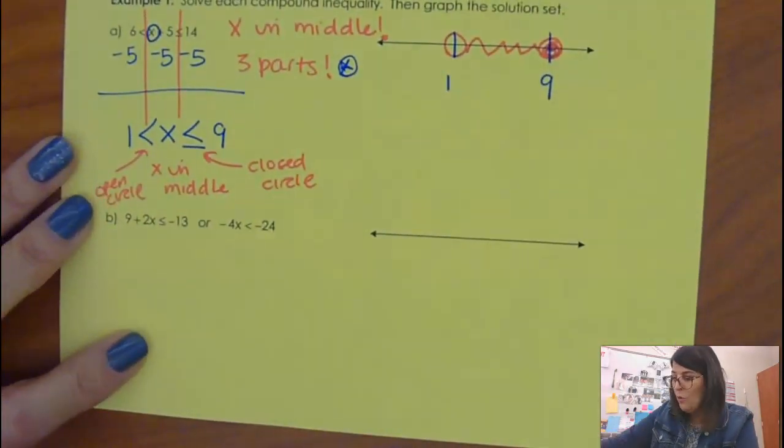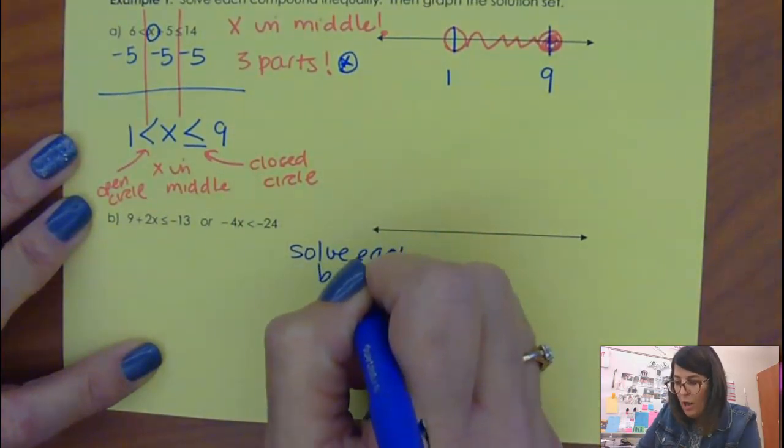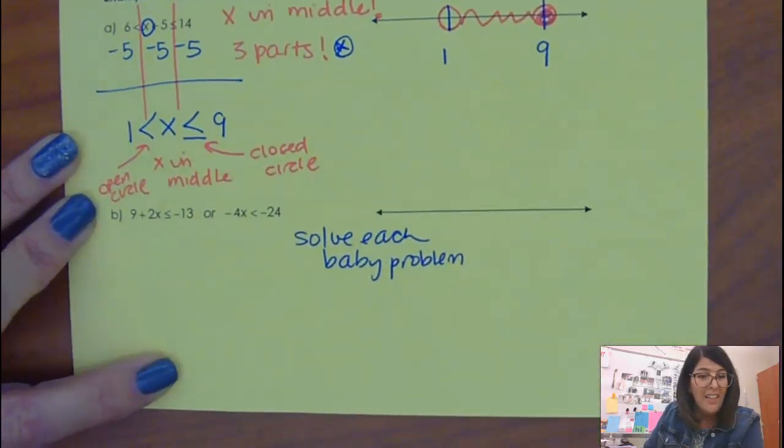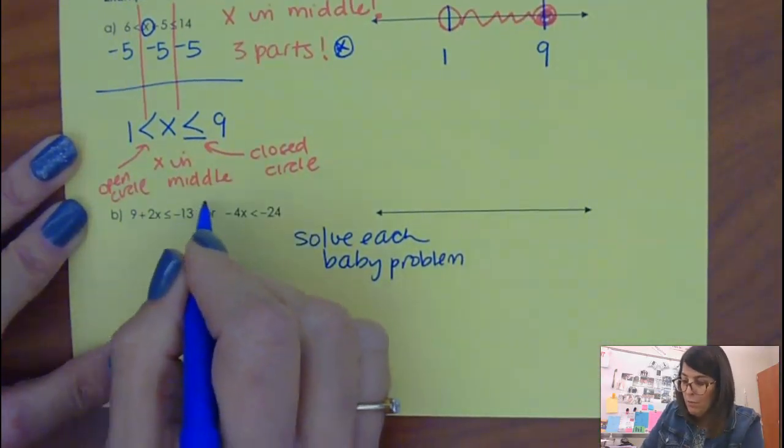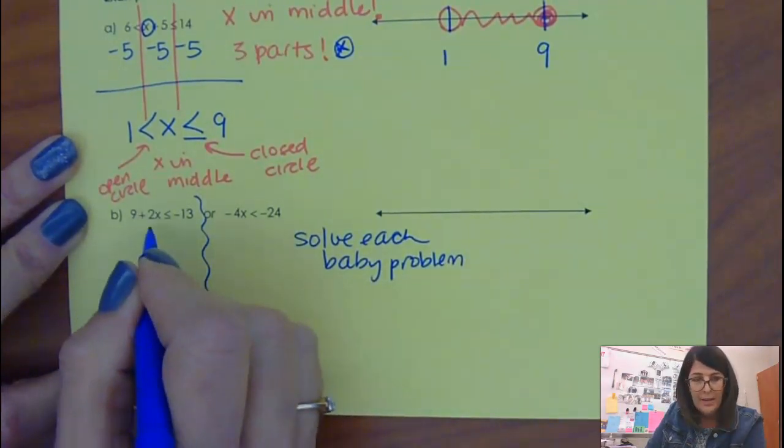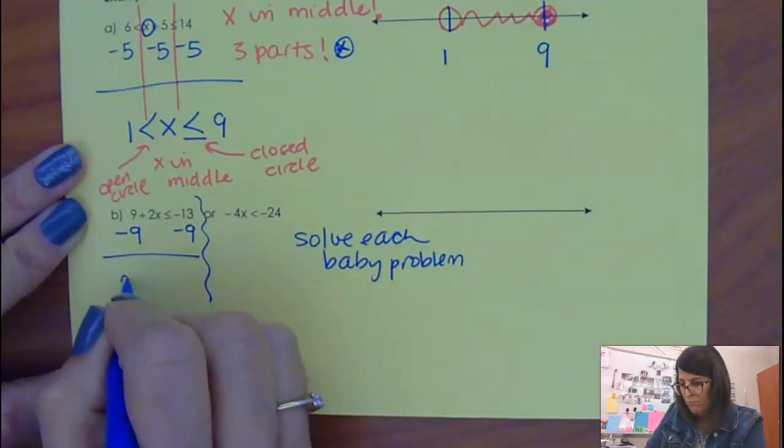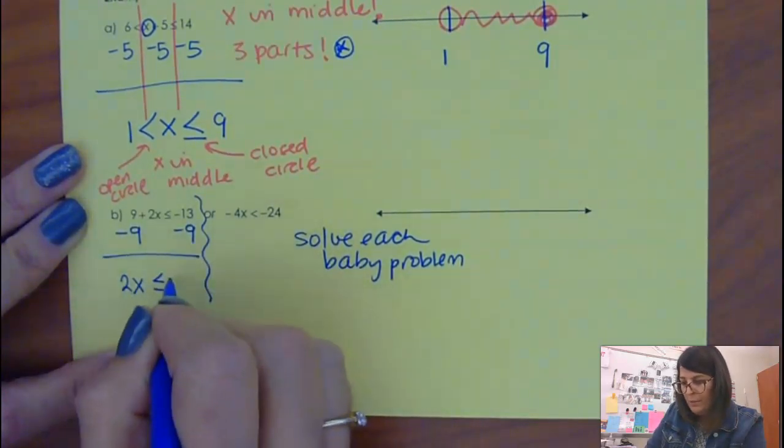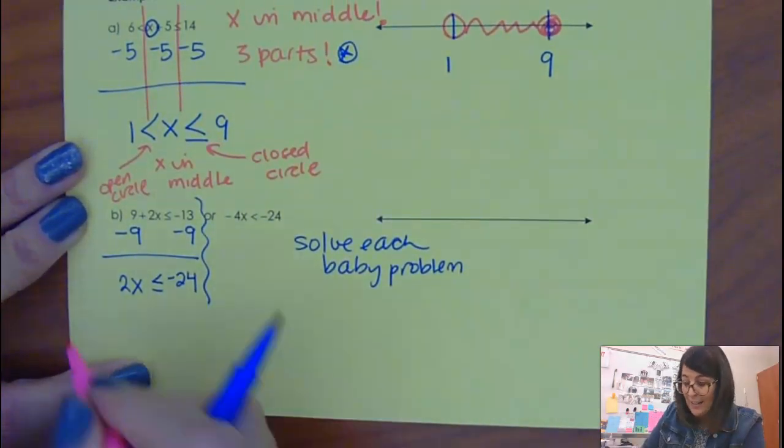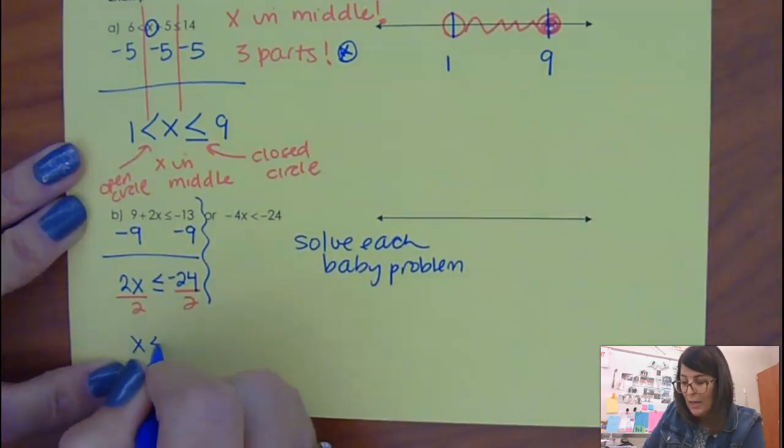Okay, if I'm solving OR, all I do is I solve each problem. I'm going to call them baby problems because I've got two things to do: solve each baby problem. So what would I do for this? Get the thing alone, get the X alone. So get rid of the 9 that's on the same side as it. 2X is less than or equal to negative 24. Get the X alone, don't stop until X is all the way alone. Divide by 2, and I've got X is less than negative 12.